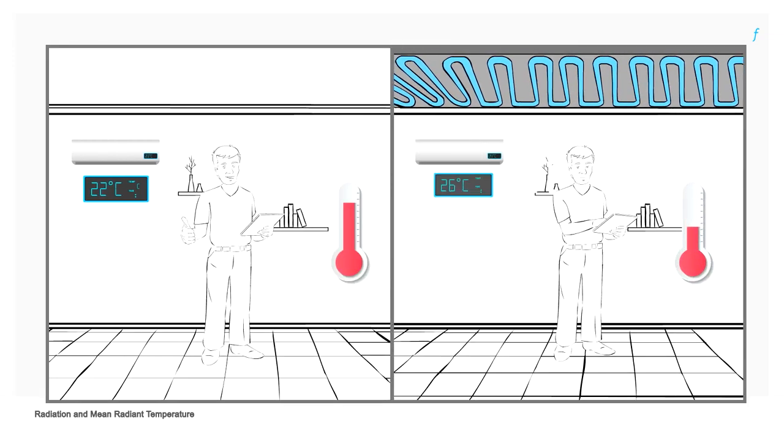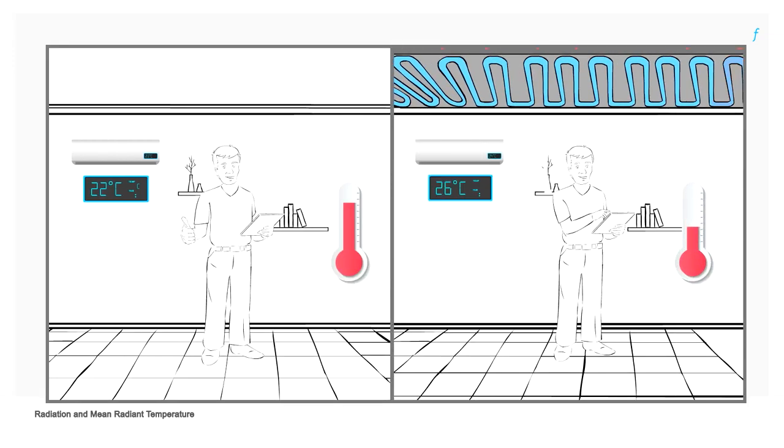On the other hand, if the mean radiant temperature is lower, occupants can feel comfortable at relatively higher air or space temperatures. One of the ways of achieving efficient and sustainable cooling is therefore through a system that lowers the mean radiant temperature, which will reduce the amount of energy required to provide thermal comfort.